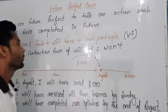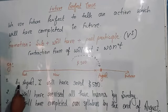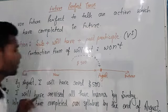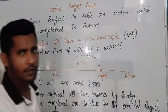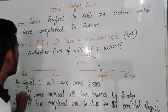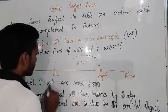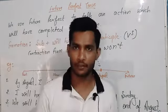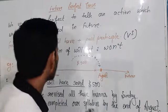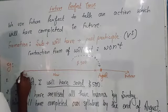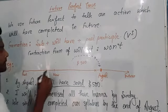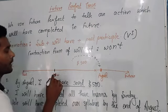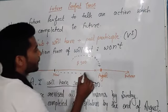Now look at the example: 'By August, I will have saved five hundred dollars.' Here we have focused on saving money. This is the past and this is now — we are talking about this action, and by August, by the month of August, if I save ten or twenty dollars every day.